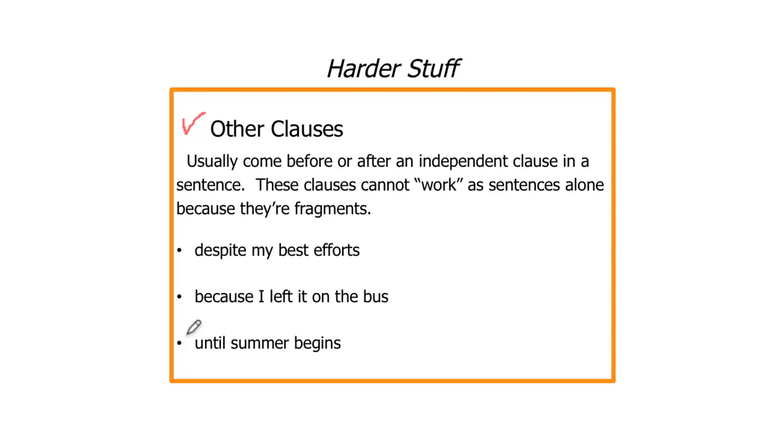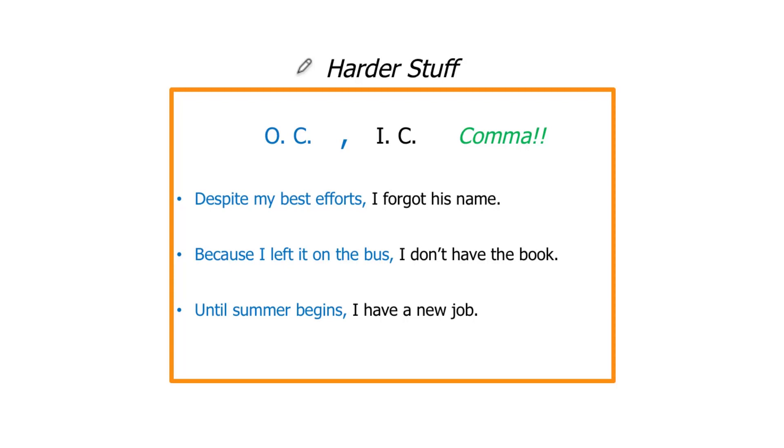But all three of these can be combined with independent clauses and a comma and become a grammatically correct and correctly punctuated sentence. This is the other clause, comma, independent clause construction. And we do get this comma here. We have some kind of fragment: 'Despite my best efforts, I forgot his name.' 'Because I left it on the bus, I don't have the book.' 'Until summer begins, I have a new job.' And of course, sentences can have more than just two clauses. We can have very complex sentences or sentences that are considered both complex and compound. I'm showing you kind of the basic nuts and bolts of what a complex sentence might look like.